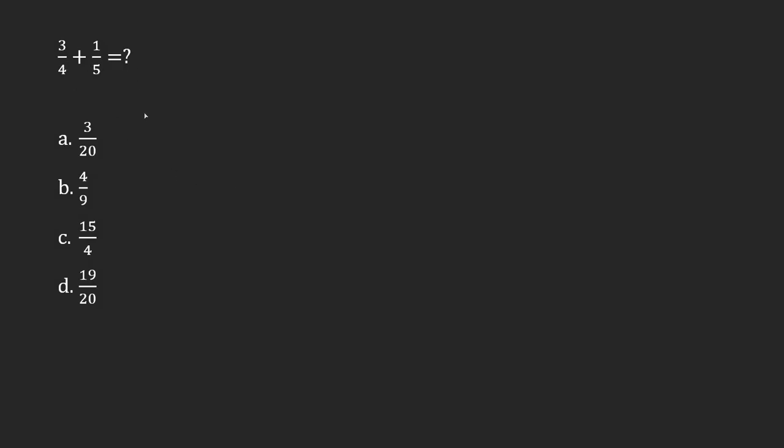3 quarters plus 1 fifth equals how much? Well, if we had the same denominators in both cases, like we had in a previous question, 3 ninths plus 4 ninths equals 7 ninths.